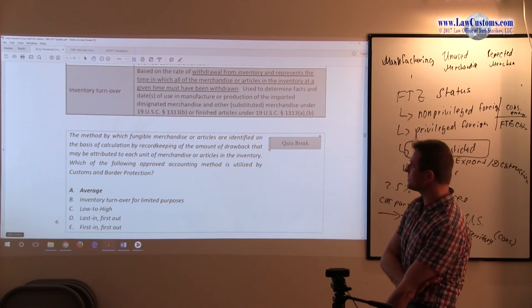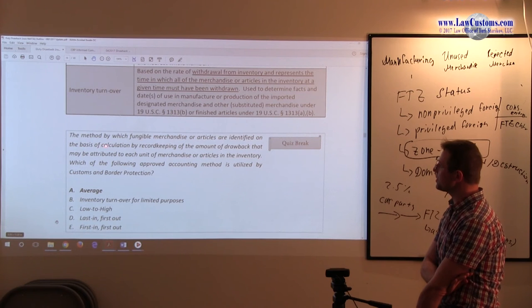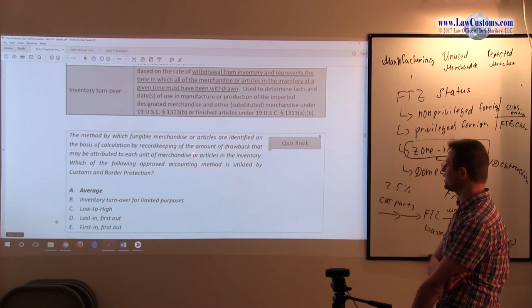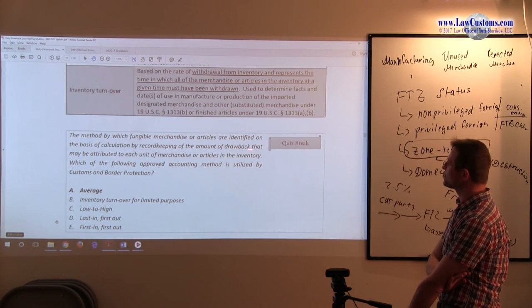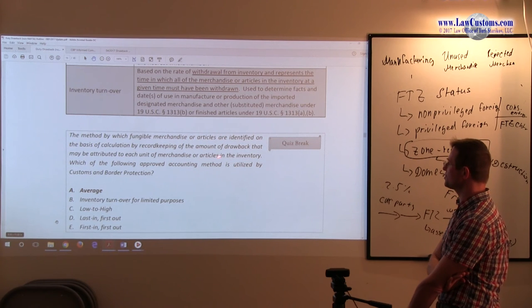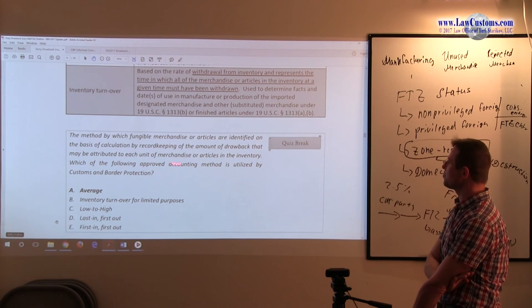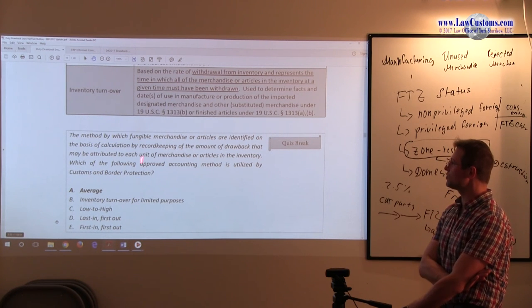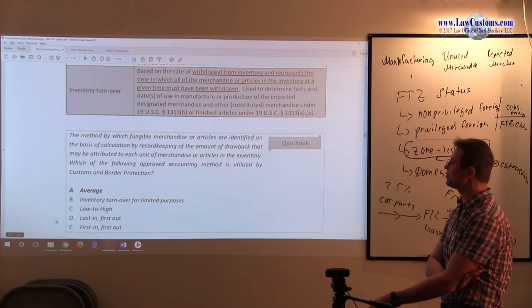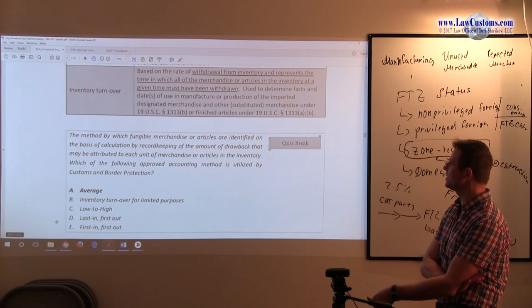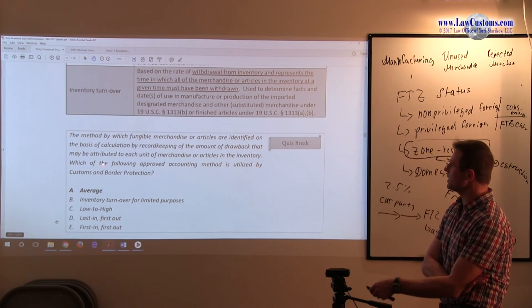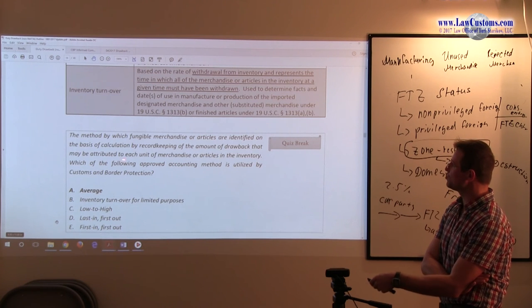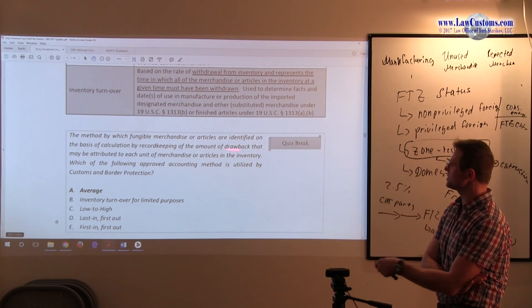Let's look at this past exam question: The method by which fungible merchandise or articles are identified on the basis of calculation and recordkeeping of the amount of drawback that may be attributed to each unit of merchandise or articles in inventory. Which of the following approved accounting methods is utilized by CBP? They're talking about fungible, interchangeable merchandise, and attribution to each unit.